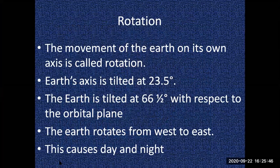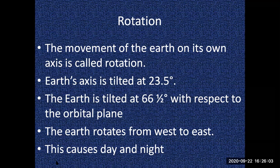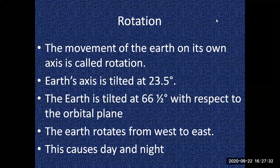What is Rotation? The movement of the Earth on its own axis. So the Earth rotates on its own axis in the rotation process. The Earth's axis is not straight — it is tilted. It is tilted at 23.5 degrees.